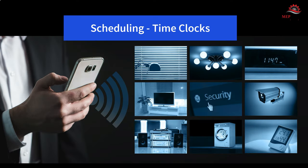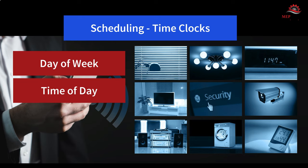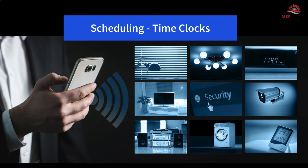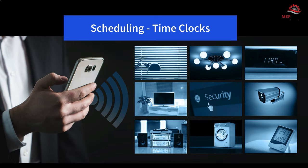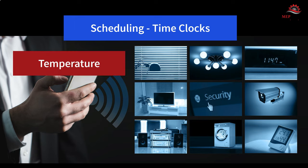Scheduling — time clock function: Adding a time clock to the thermostat or BAS will allow additional control based on day of the week or time of day. For example, you could have the thermostat turn on the air conditioner an hour before you get home from work so that the home is already cool when you arrive. A simple time clock allows the HVAC system to follow a schedule based on time, while the thermostat is based on temperature. So with a simple thermostat, we can control both temperature and time.